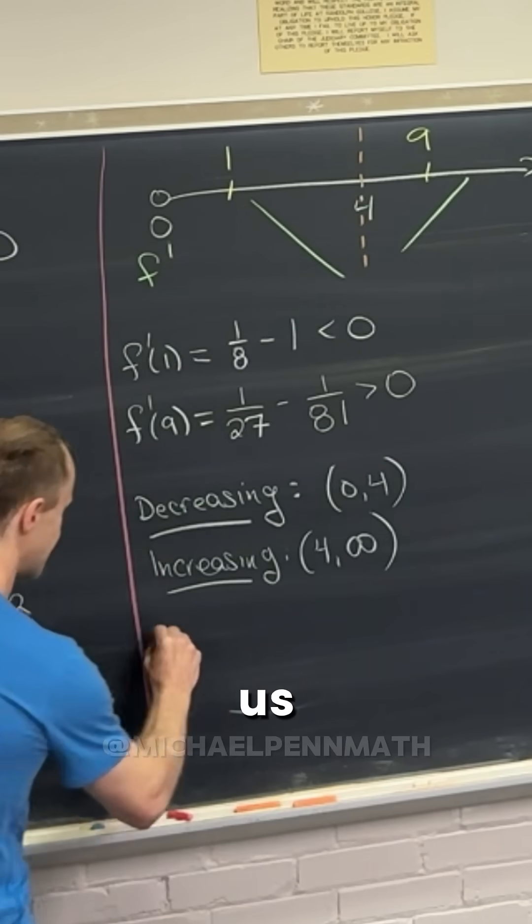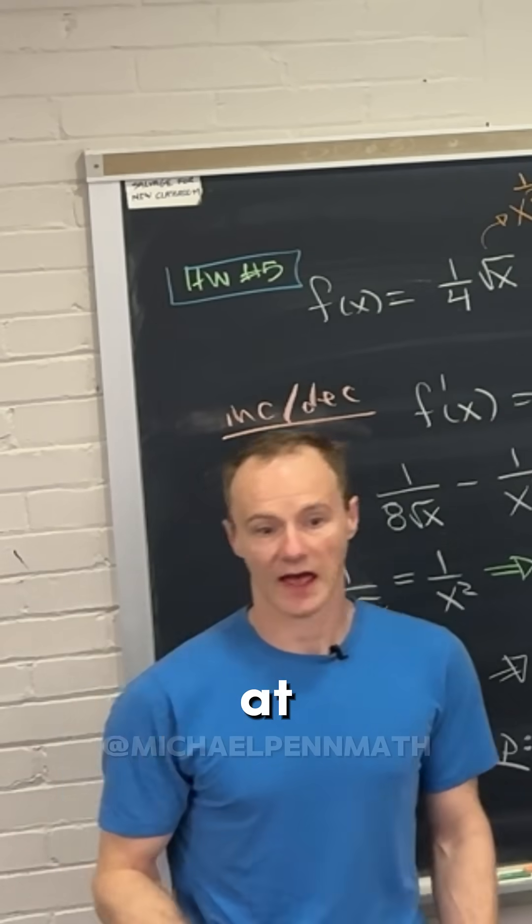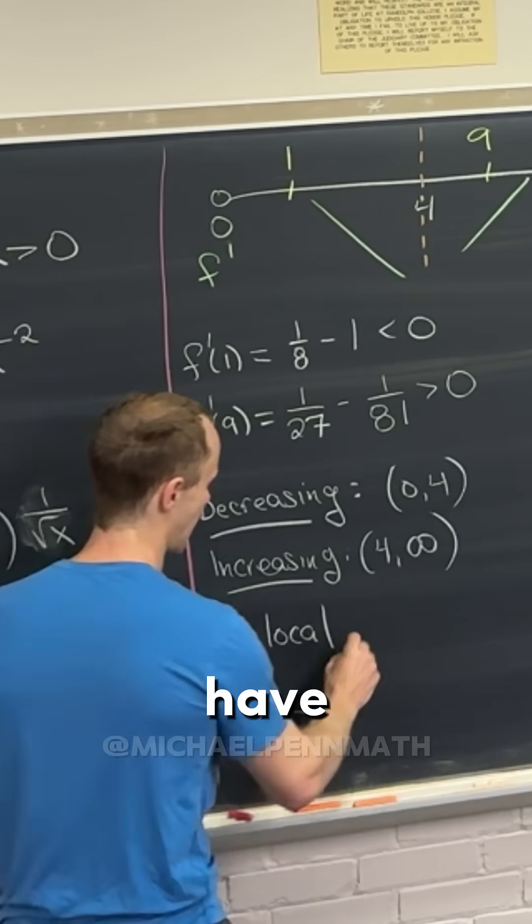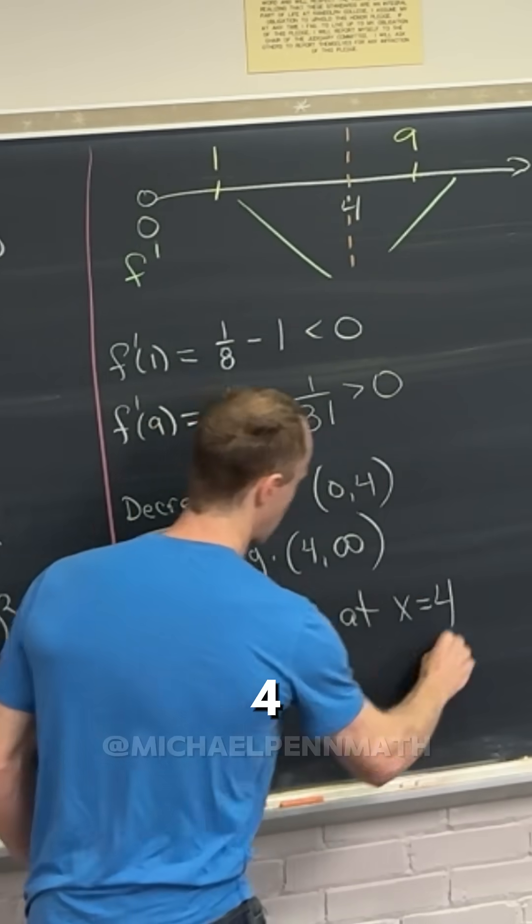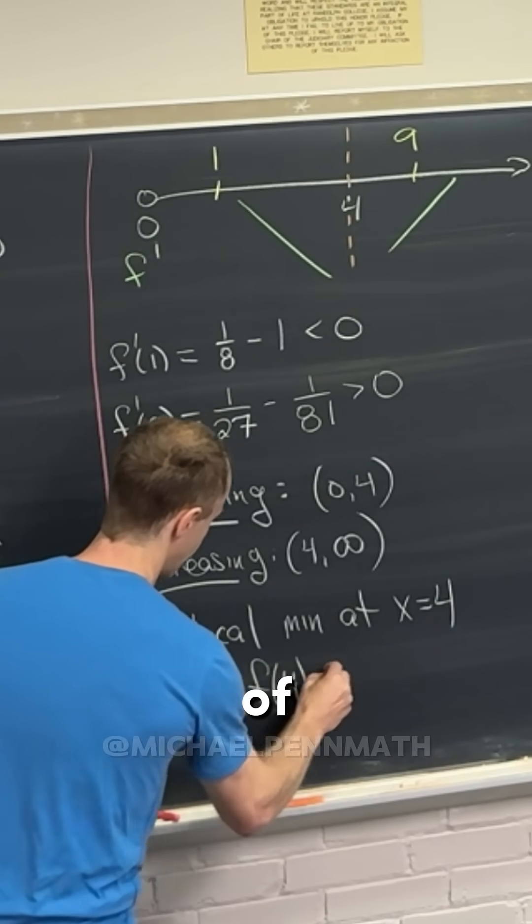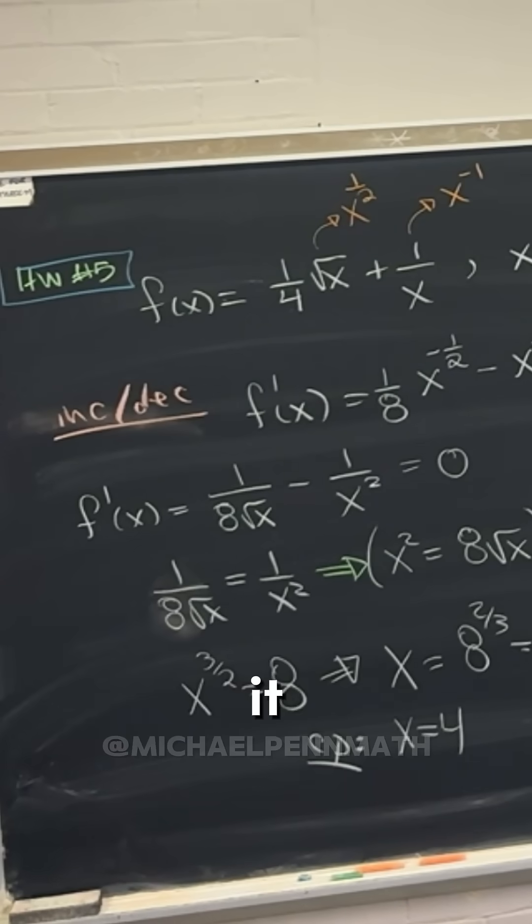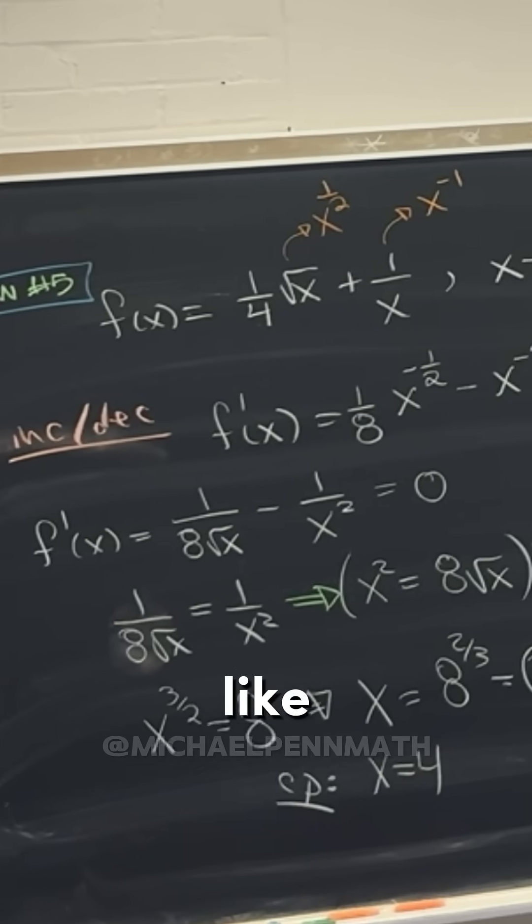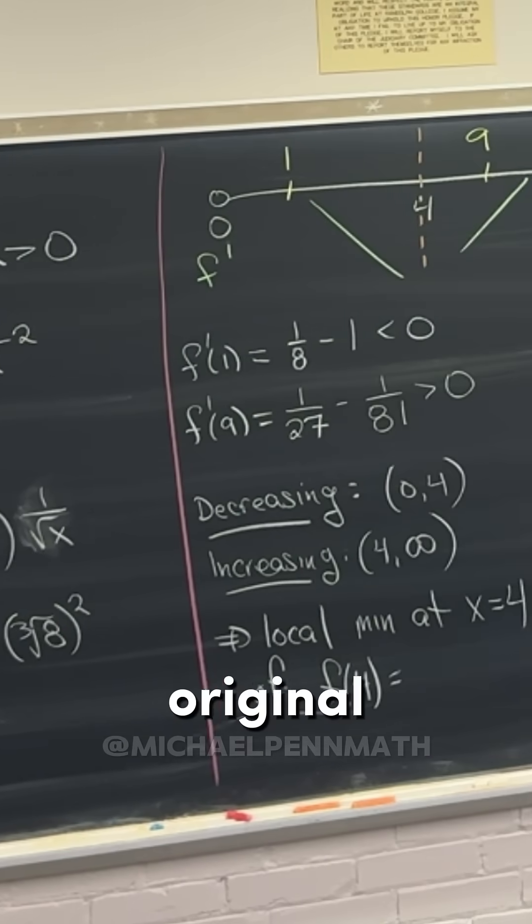Also, that gives us a local what where? Yeah, so we have a local minimum at x equals 4. And the local minimum is f of 4. You plug it into the original function because when you're talking about it being increasing or a minimum or concavity, you're using derivatives to describe the original function.